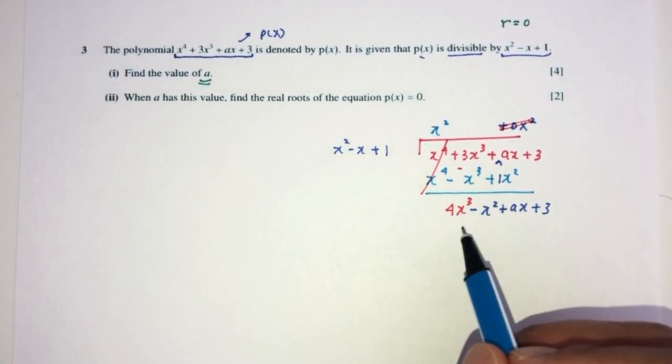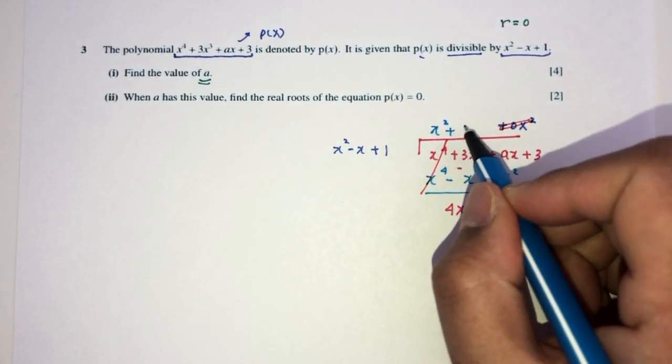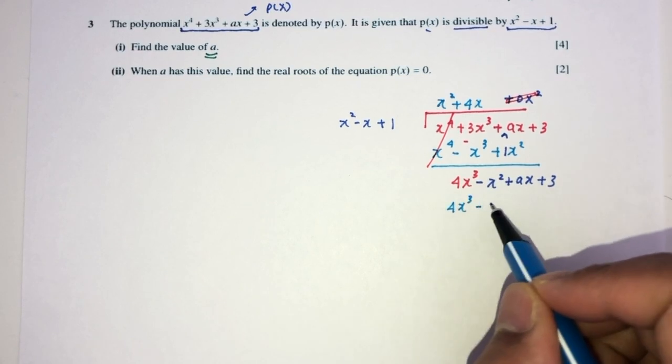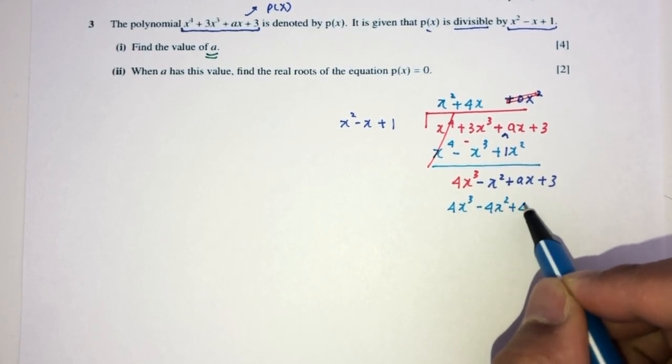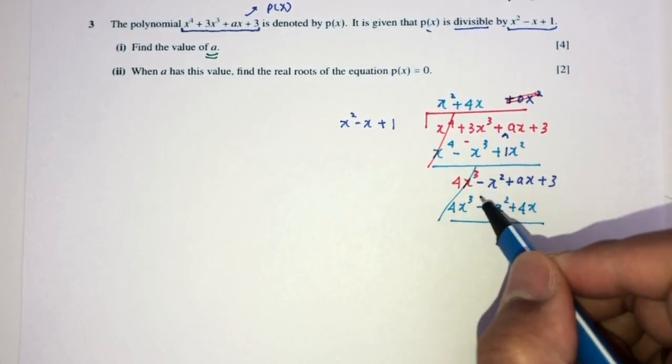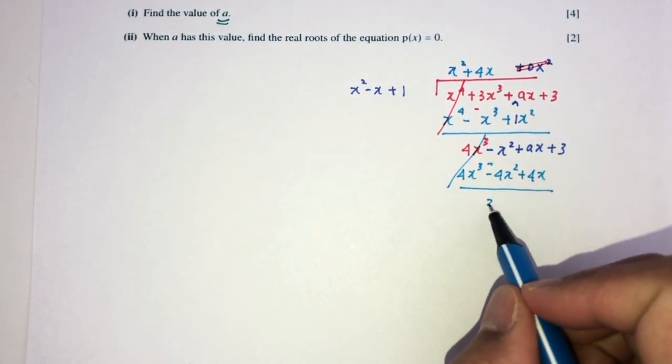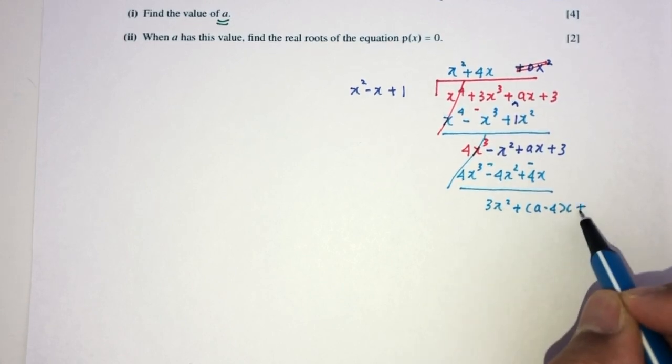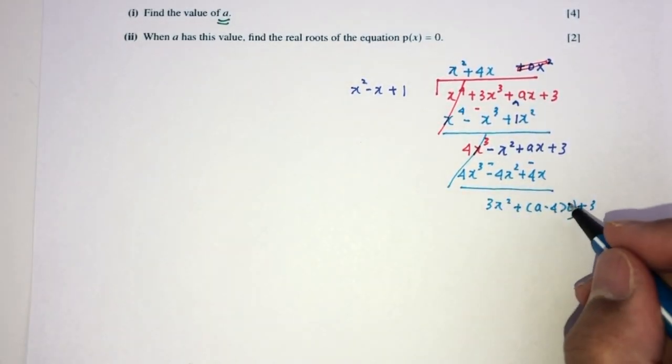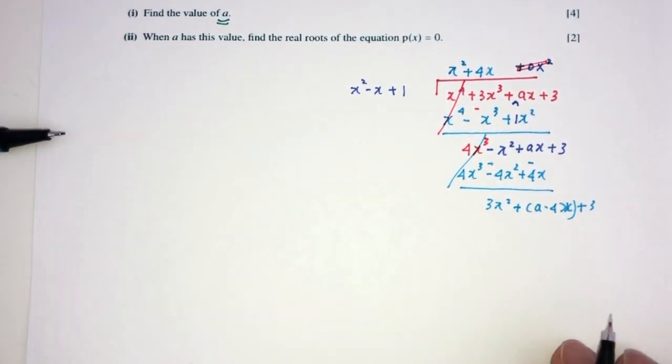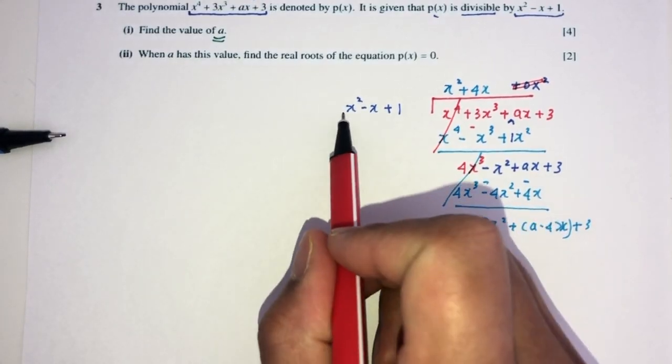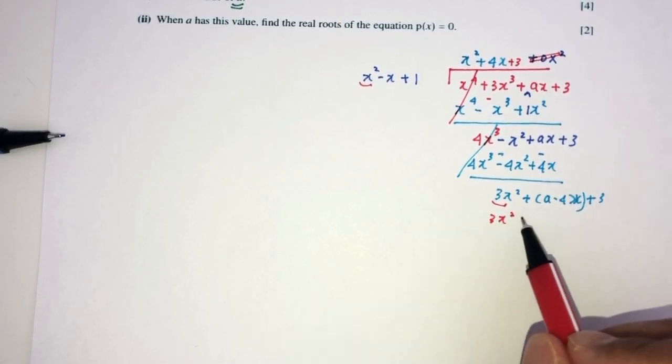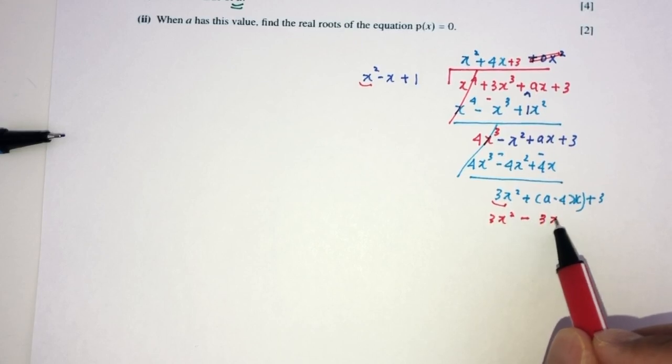Next step, how would you make x square become 4x cube? Multiply by 4x. So, you will have this times this will become 4x cube minus 4x square plus 4x. This will go away. Now, minus plus becomes 3x square. This will become plus a minus 4x and plus 3. Finally, we have to make this one become this one. So, multiply by plus 3. So, you will have 3x square minus 3x plus 3.